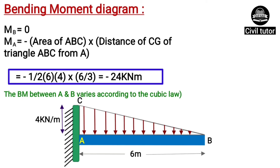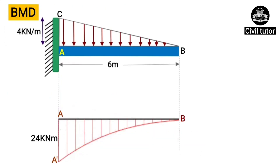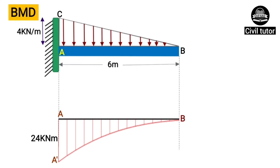The negative sign indicates a clockwise moment. It should be noted that the bending moment between A and B varies according to the cubic law. To draw the BMD, we start from the baseline AB. Since bending moment at B is 0, we mark it as 0. At point A, the value is −24 kilonewton meter, so we draw it to some scale below the baseline.